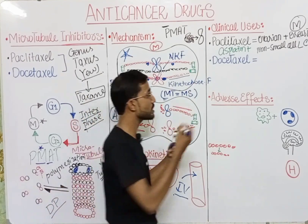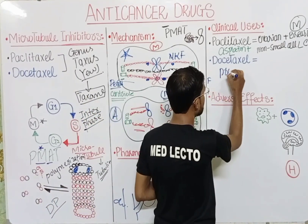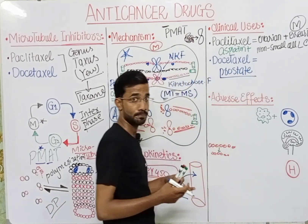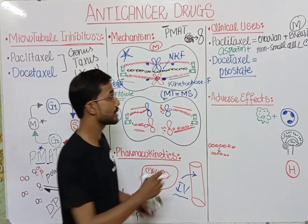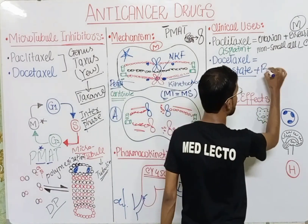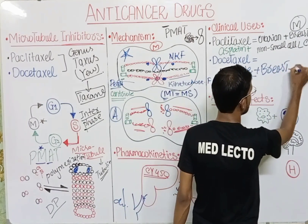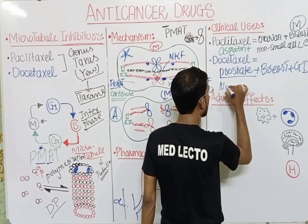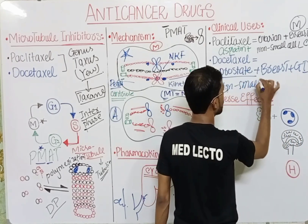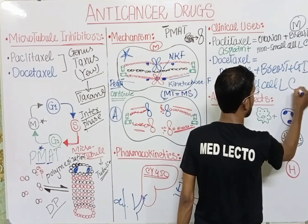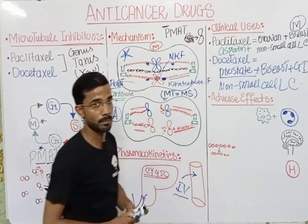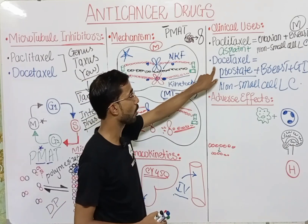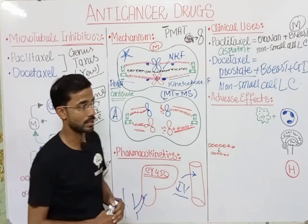Docetaxel is used in prostate cancer. It can also be used in breast cancer, GIT cancer, and non-small cell lung cancer. Non-small cell lung cancer is an indication shared by both paclitaxel and docetaxel.